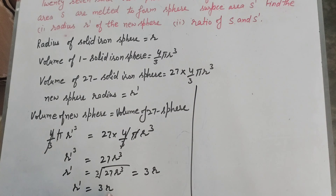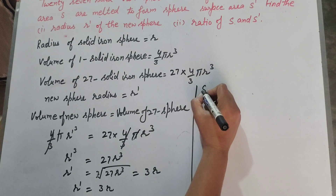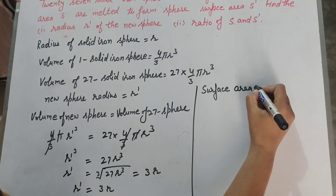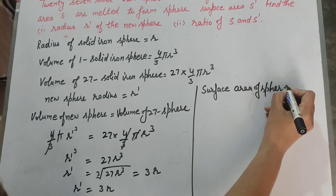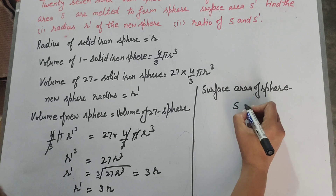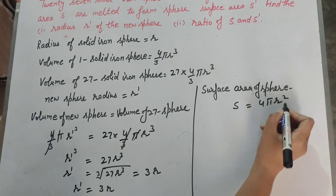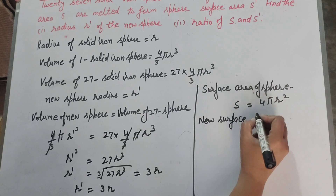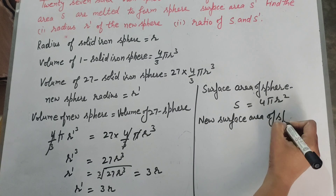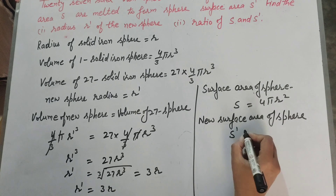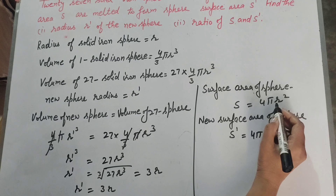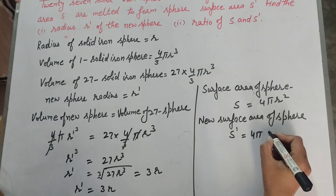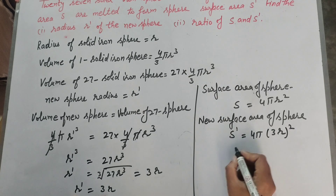Now we find the surface area of the new sphere. We know the formula: surface area of a sphere s equals 4 π r². This is the surface area of the old sphere. For the new sphere, s' equals 4 π (3r)².